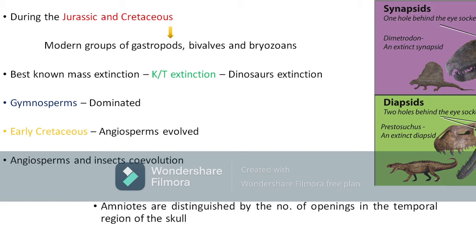If dinosaurs were still alive, we don't know how much diversification of mammals and birds might have happened — there may have been no humans on Earth. Gymnosperms dominated during the Mesozoic era, having first formed in the Paleozoic. In the early Cretaceous period, angiosperms — the flowering plants — evolved. As flowering plants evolved, insects co-evolved alongside them.